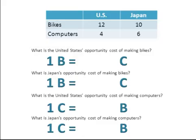Absolute advantage exists when a nation or person is able to produce a good or service more efficiently than another nation. That means they can usually produce more using the same resources. In our example on the screen you can see that the United States can produce 12 bikes and Japan 10, so the United States has the absolute advantage because they can produce more using the same resources.